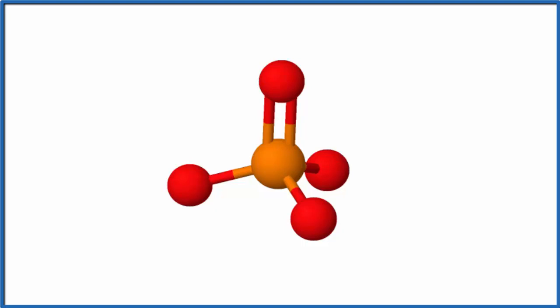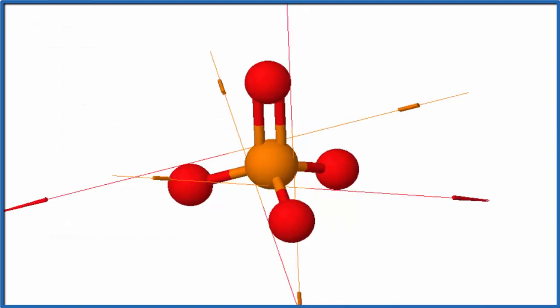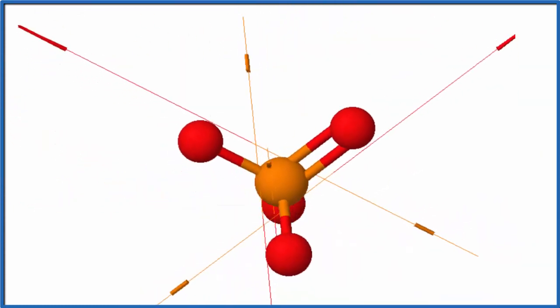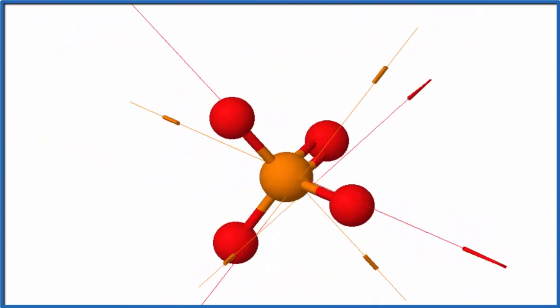If we look at the dipoles on each individual bond here, that looks like this. We're seeing that each phosphorus and oxygen bond has an arrow showing us the dipole. We have a dipole for each one of these pointing up through the oxygen. The oxygen is more electronegative.